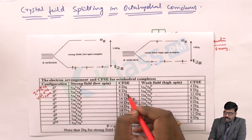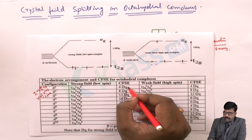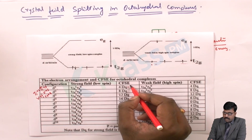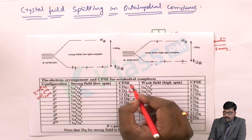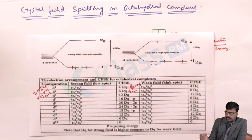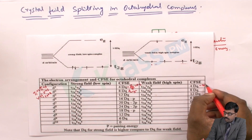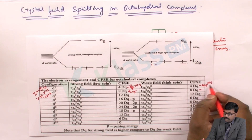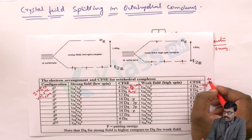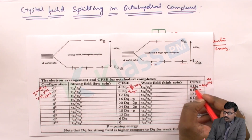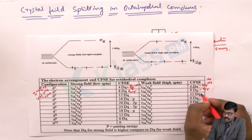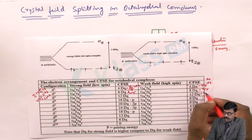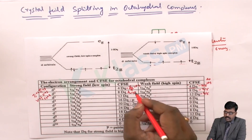Here, 12 dq notation is used. The delta O is written in dq form by removing the decimals — multiplying by 10. So 2/5 ΔO equals 0.4 ΔO, written as 4 dq, and 6/5 ΔO equals 1.2 ΔO, written as 12 dq. In this way all energy values are expressed.